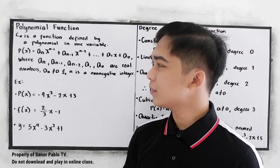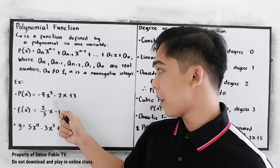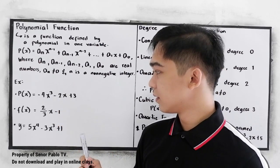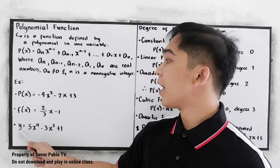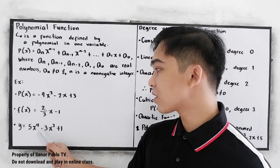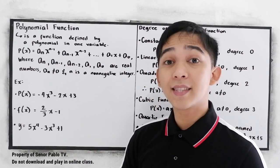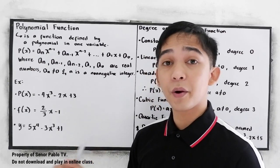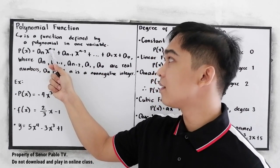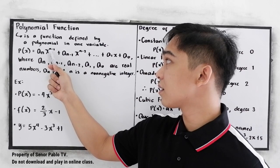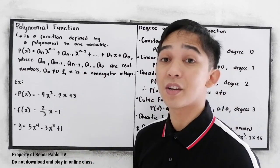And a-sub-n must not be equal to 0, and n is a non-negative integer. To better understand, let's have the following examples. We have p(x) = -4x³ - 2x + 3, f(x) = (2/3)x - 1, and y = 5x⁴ - 3x³ + 1. Notice that in our three examples the degree ranges from highest to lowest — that's why in our form we have x raised to n, x raised to n-1, x raised to n-2, and so on, in decreasing order.